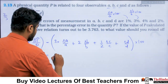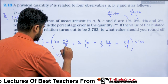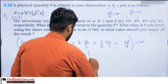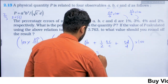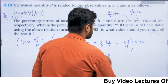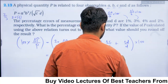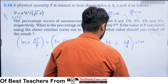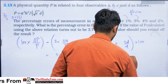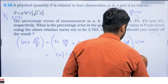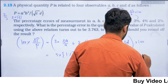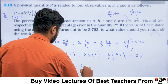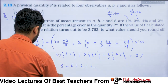Therefore we are having: 3 × 1% for A, plus delta B by B which is 3%, plus (1/2) × delta C by C which is 4%, and delta D by D which is 2%. So we get 3 + 6 + 2 + 2 = 13%.